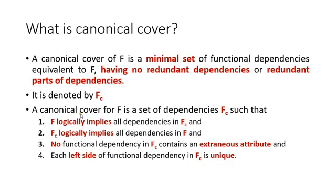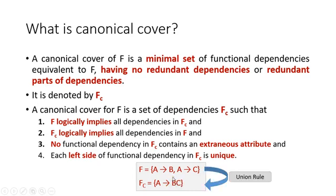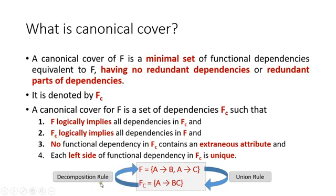Let us see a small example. Two functional dependencies are given: A determines B and A determines C, and A determines BC. By using the union rule, we can say A determines BC is the canonical cover. And conversely, applying the decomposition rule on Fc gives us A determines B and A determines C, showing that Fc logically implies all dependencies in F.